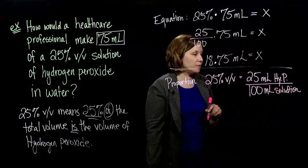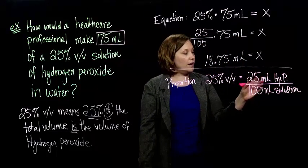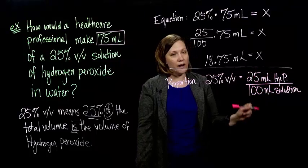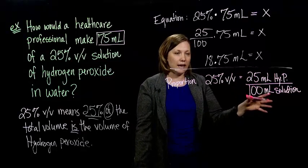So that's what our 25% volume per volume is. So in 100 milliliters of solution, 25 of those milliliters should be hydrogen peroxide. So with this, we can set up a proportion.